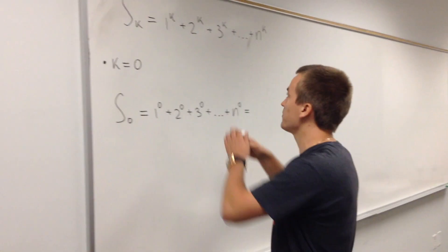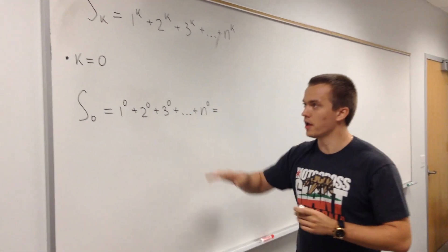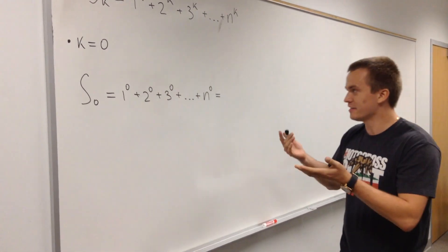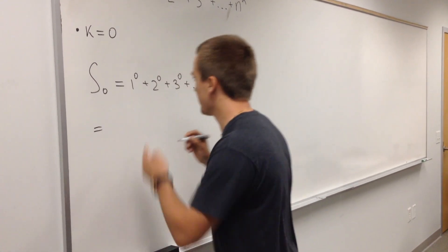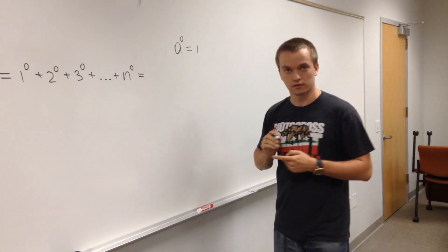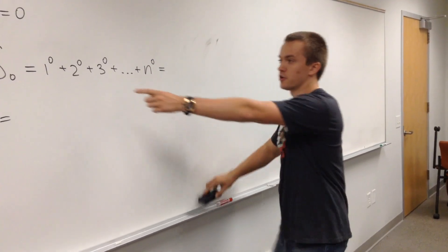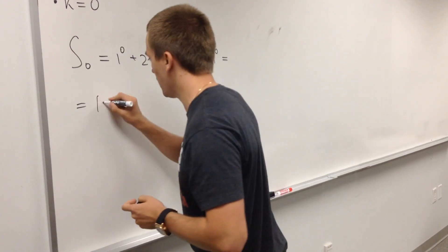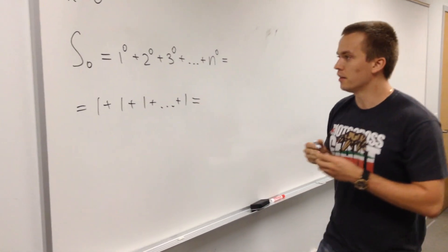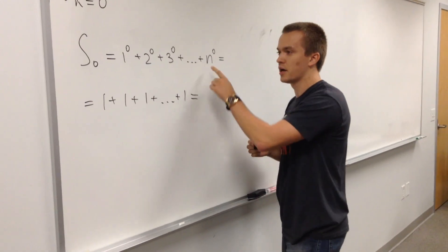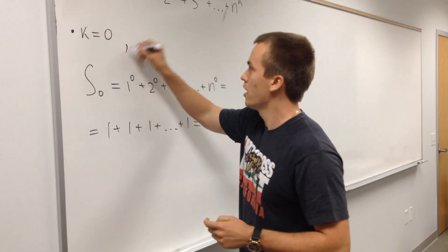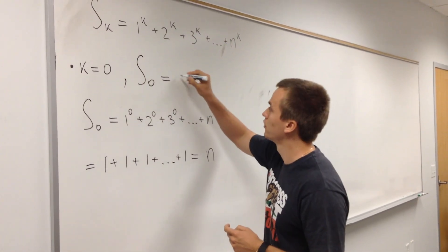I will name this sum S. Let's find what the sum is equal to for k equal to zero. You can see this is really simple and trivial, because if you have a number a, then a to the power of zero is just equal to one. So each of these terms is going to be equal to one. I will have one plus one plus one... I have n ones, so S is equal to n. For k equal to zero, S equals n.